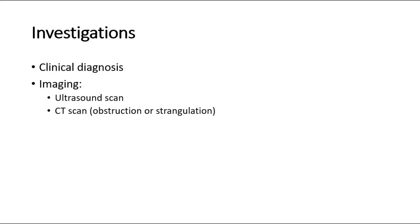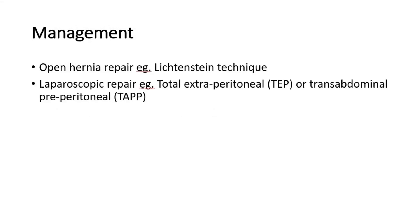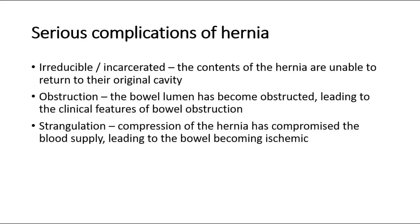Any patient with a symptomatic inguinal hernia, such as significant mass or discomfort, should be offered surgical intervention. This can be either open or laparoscopic surgery. Open hernia repair, such as mesh repair using the Lichtenstein technique, is very commonly used. A laparoscopic approach is preferred in those with bilateral or recurrent inguinal hernias, and can be either total extraperitoneal (TEP) or transabdominal preperitoneal (TAPP) approach.